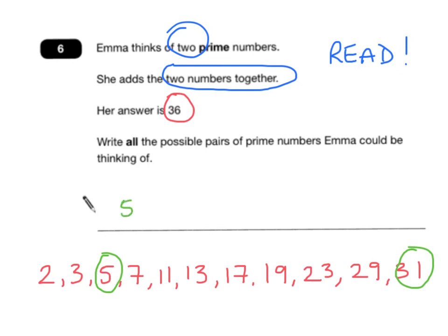So 5 and 31 is definitely a pair. Let's look for another pair. What would pair with 7? Well, 29 and 7 make 36, so that's another pair.